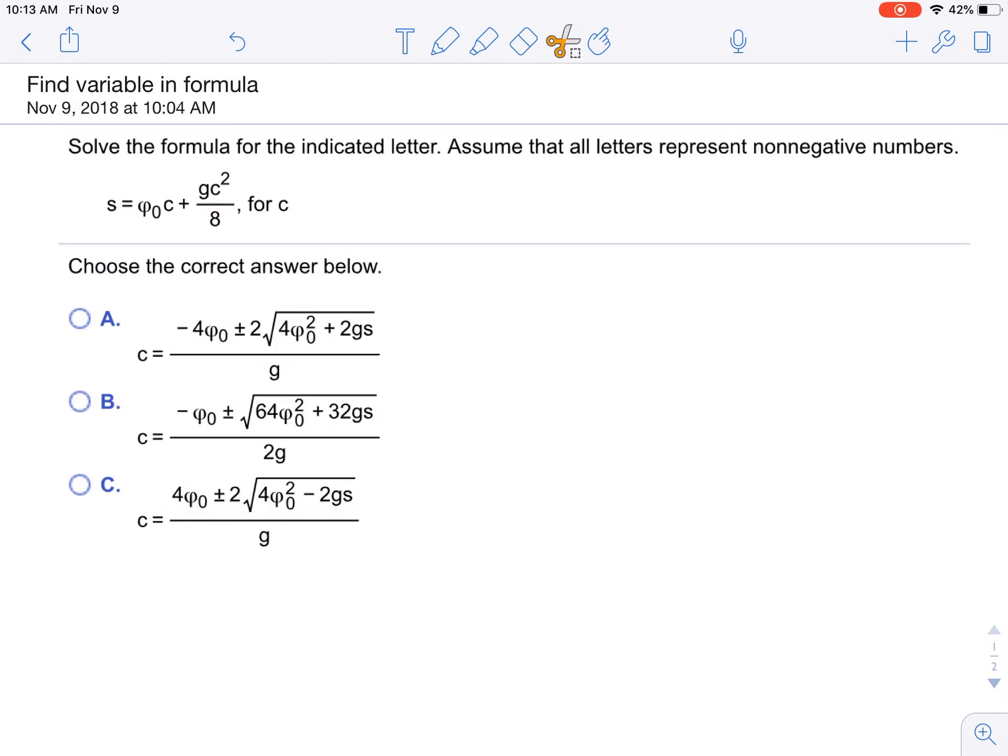Alright, solve the formula for the indicated letter. Assume that all letters represent non-negative numbers. We have s equals some quadratic equation in terms of c. Notice you have c squared and c, so we can rewrite it.